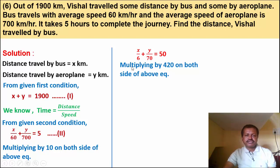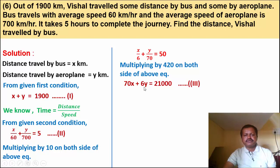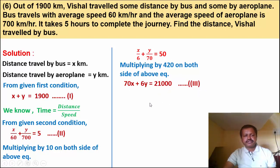420 into x upon 6 gives 70x; y upon 70 into 420 gives 6y; and 50 into 420 gives 21000. So 70x plus 6y is equal to 21000. This is equation number 3.